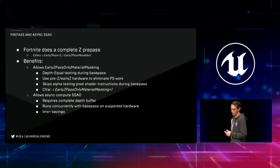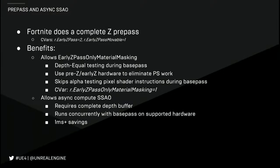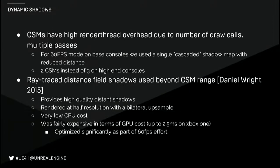Moving on to other GPU optimizations — we do a full Z prepass on Fortnite. A couple of benefits from this: it allowed us to only evaluate the opacity for masked materials in the prepass and then use depth equal in the base pass, saving a bit of time. It also enabled us to use async compute SSAO — basically after we do the prepass, we kick off an async compute job to compute SSAO. While we're populating the G-buffer, which can vary between being vertex bound and bandwidth bound, SSAO can use the free compute power to do its job.